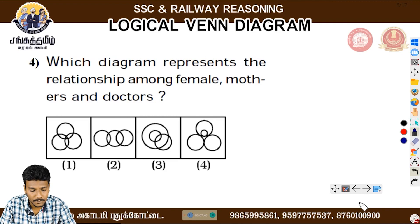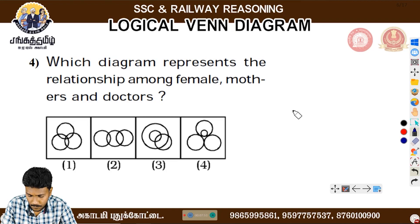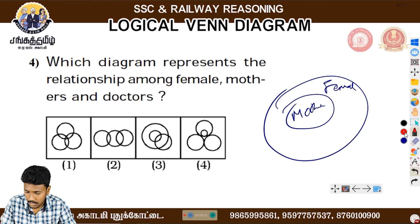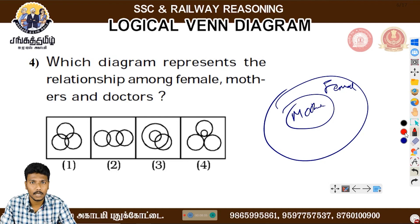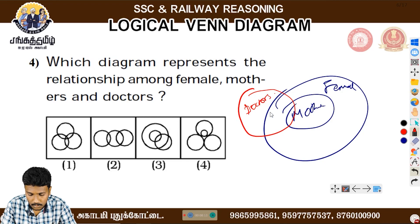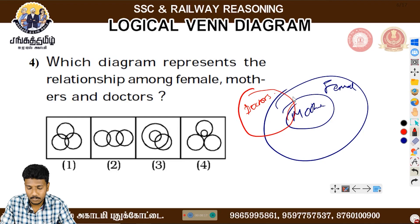Which diagram represents the relationship among female, mothers, and doctors? What do you want to say about all mothers? In this case, we can say all doctors and mothers overlap. We can say mothers as a subset, and females as a larger group.